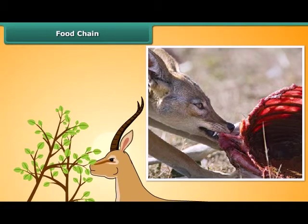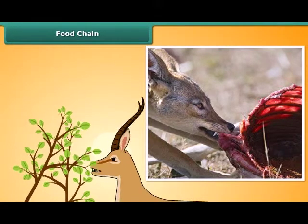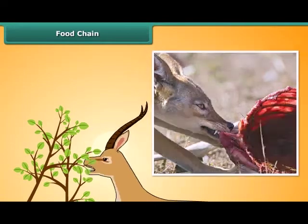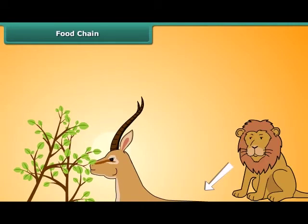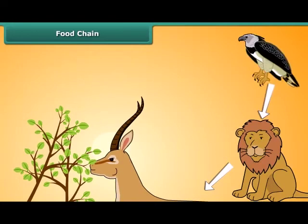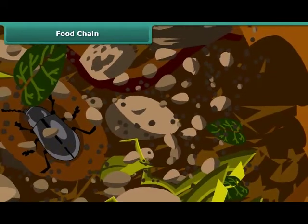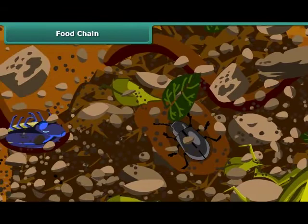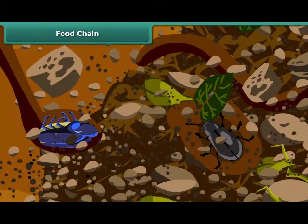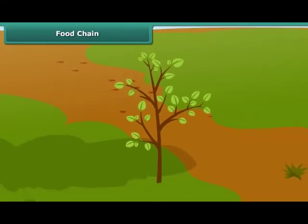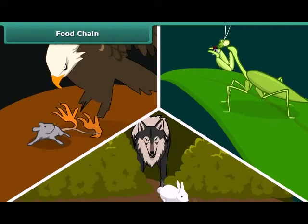Let us take a simple example of a food chain. Plants use sunlight and prepare food. Plants are eaten by deer. Deer are eaten by lions. When the lions die, their physical remains are eaten by scavengers such as vulture, hyena, etc. Decomposers such as fungi and bacteria feed on the remnants of dead organisms and break them down into humus, which provides nutrients to plants. Thus the food chain comes one full cycle.